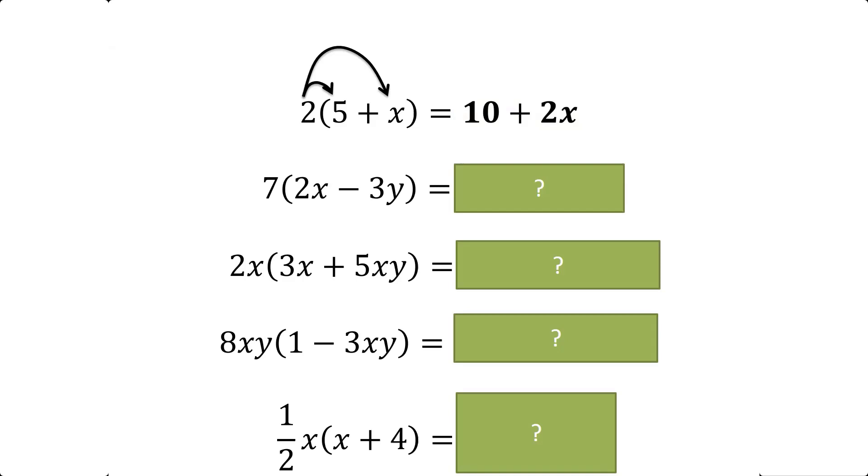Please. 14x minus 21y. Excellent, 14x take away 21y. And then the third one, 6x² plus 10x²y. Excellent, 6x² plus 10x²y.